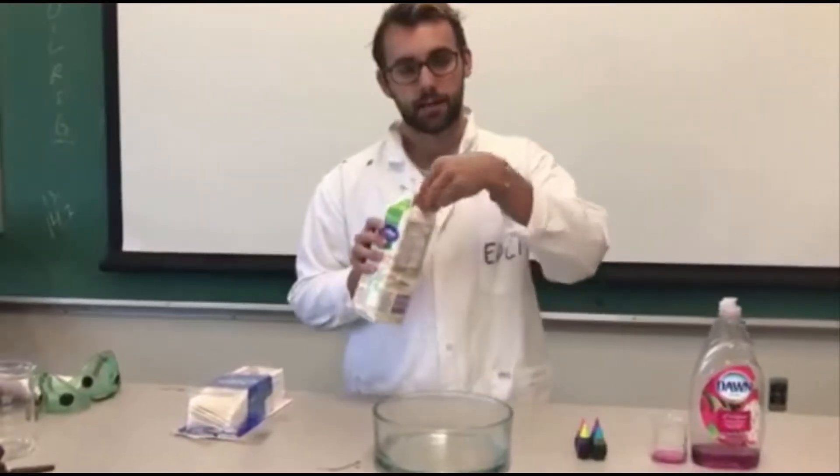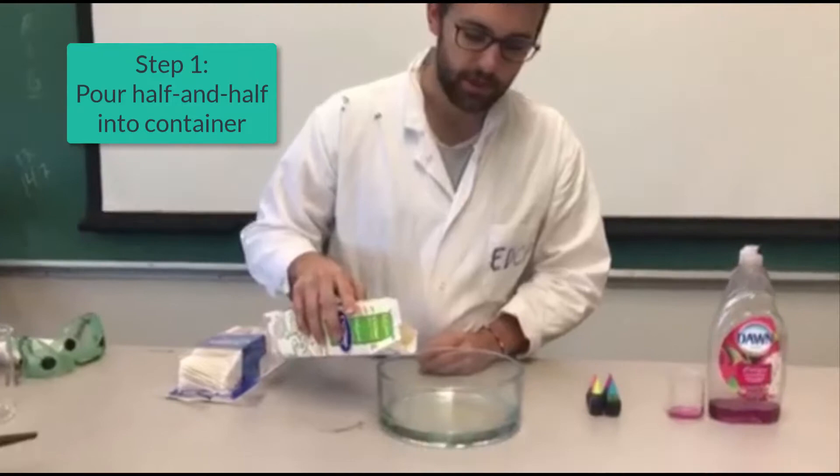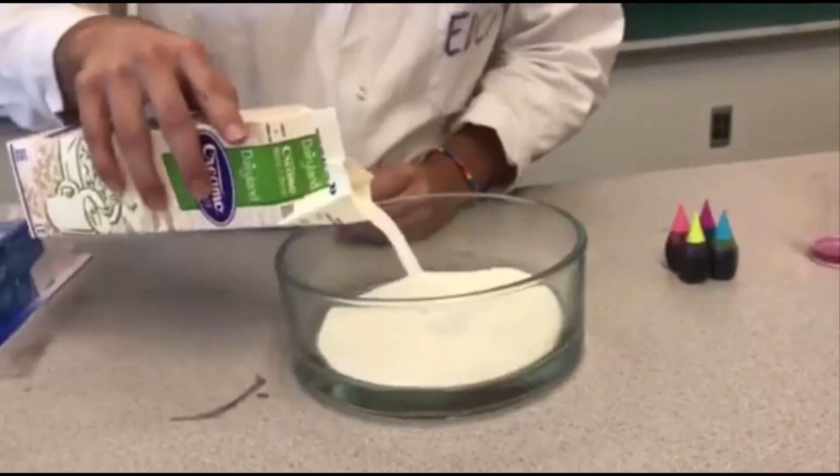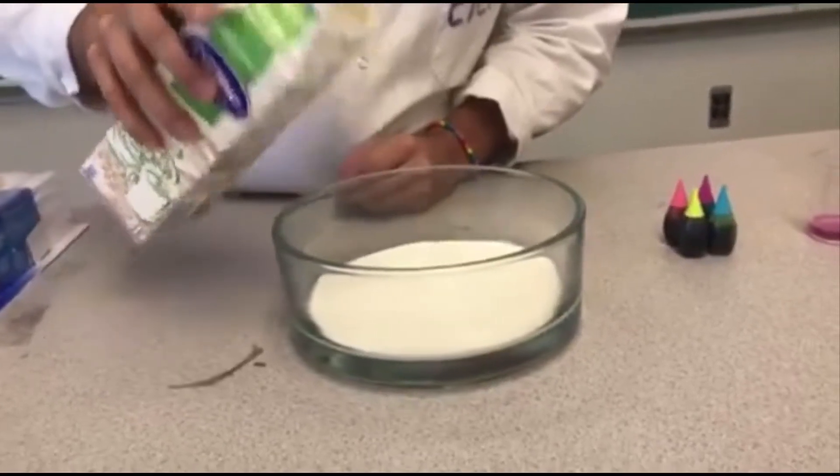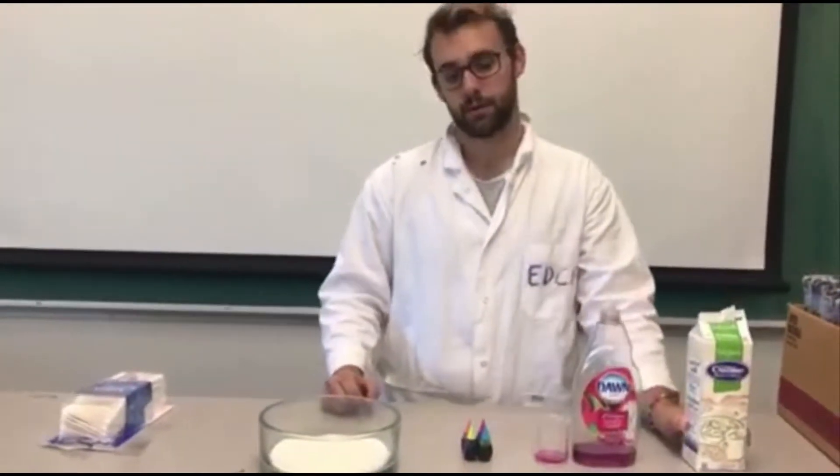First, take your half and half and pour it into the container. You want to make sure that the half and half covers the entire bottom of the container. Just like that. You just want a thin layer of the half and half or the milk if you are using milk.